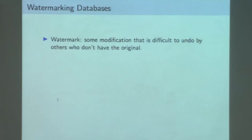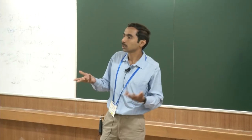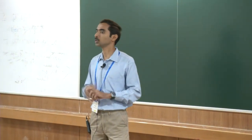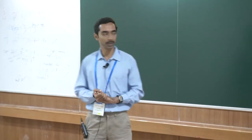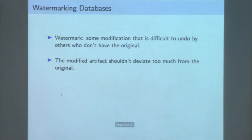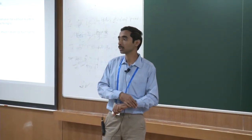I will begin with broadly describing what is a watermark. Suppose you have some kind of a digital object. The most general term, a watermark is some kind of a modification which is difficult to undo by someone who doesn't have the original. The motivation is that you don't want other people to have the original, and you want to prove that you only have the original copy and others are duplicates. Another sensible condition is that this modification shouldn't deviate too much from the original copy.